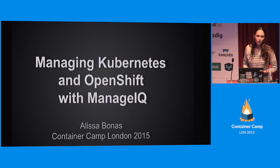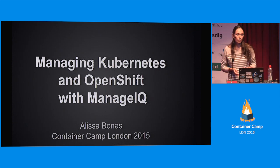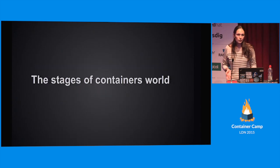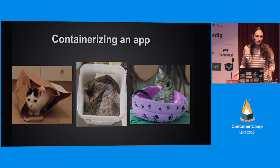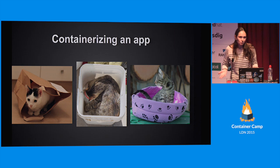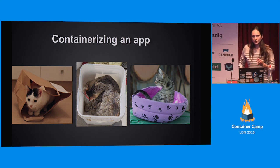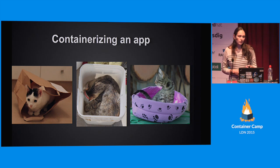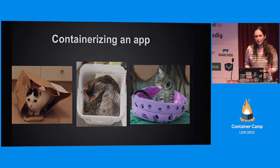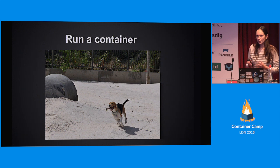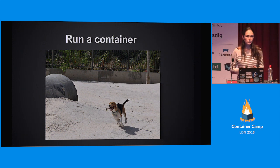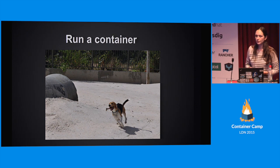You probably know by now that working with containers involves several different stages, and I would like to make a quick overview of those stages. First, we need to be able to containerize our app, and that's typically doable today because there are many different methods and techniques around that. Next, we should be able to run a container, or in other words, the ability to spin up a container instance, and that is also possible today with Docker, Rocket, and other technologies.